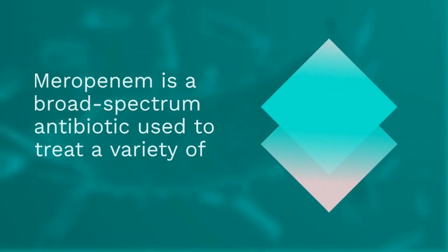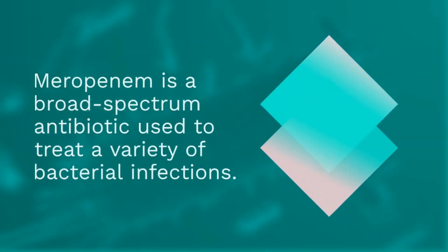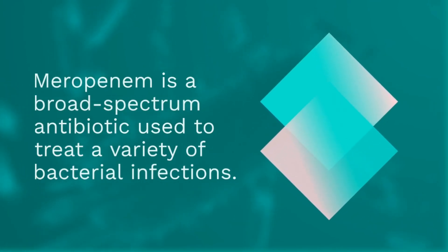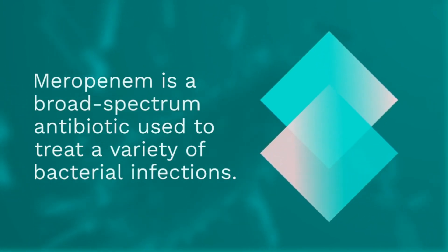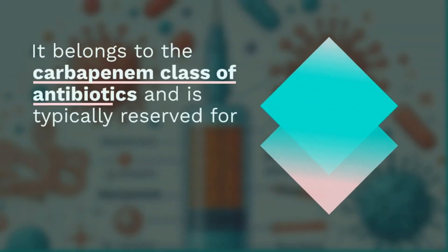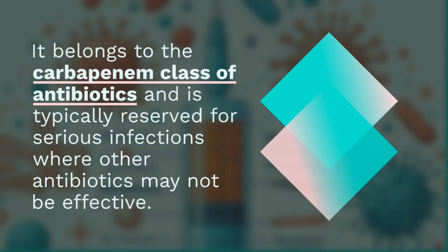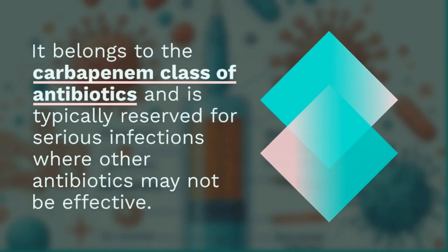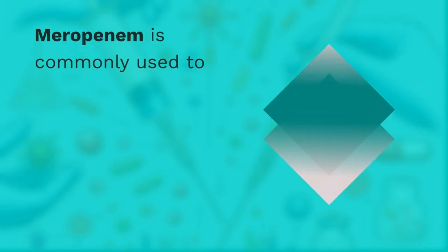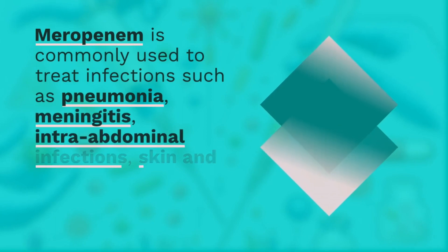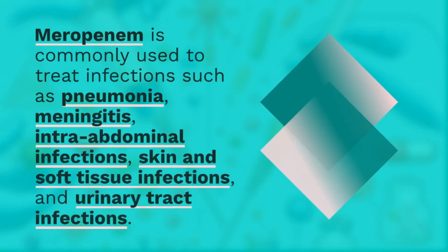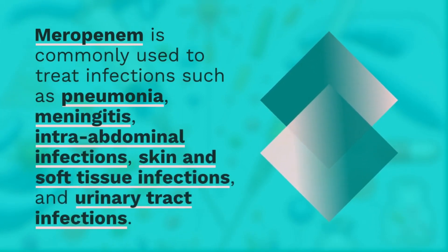Use of Meropenem Injection. Meropenem is a broad-spectrum antibiotic used to treat a variety of bacterial infections. It belongs to the carbapenem class of antibiotics and is typically reserved for serious infections where other antibiotics may not be effective. Meropenem is commonly used to treat infections such as pneumonia, meningitis, intra-abdominal infections, skin and soft tissue infections, and urinary tract infections.